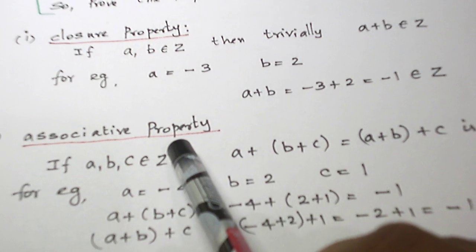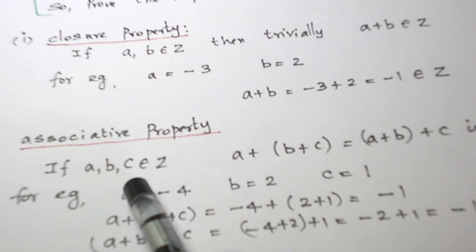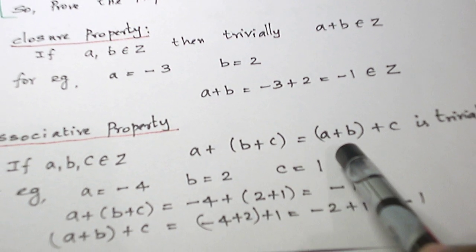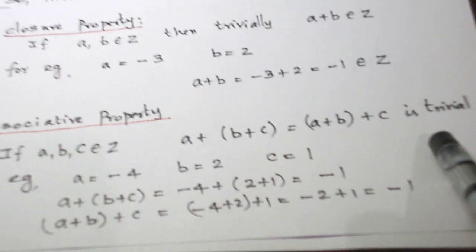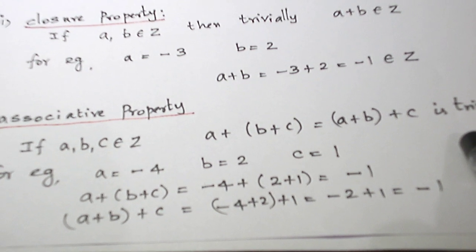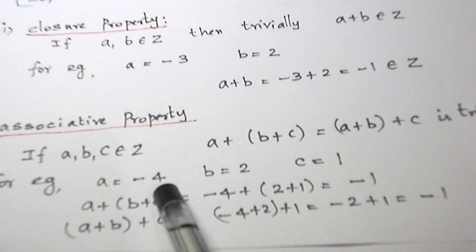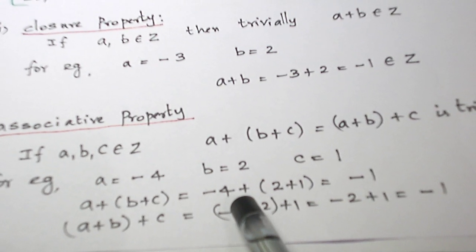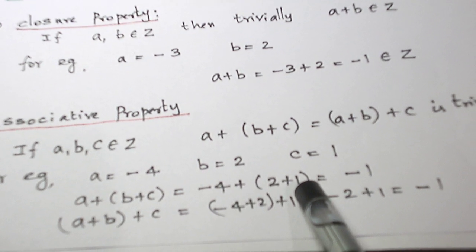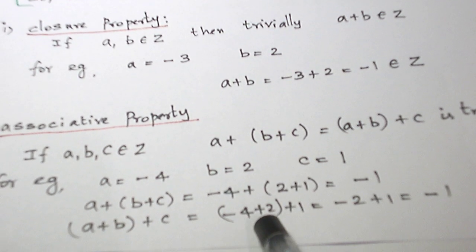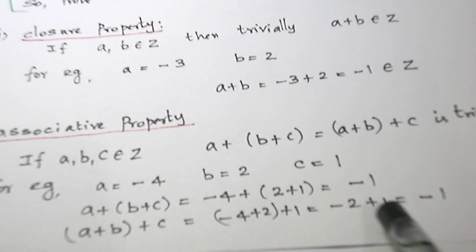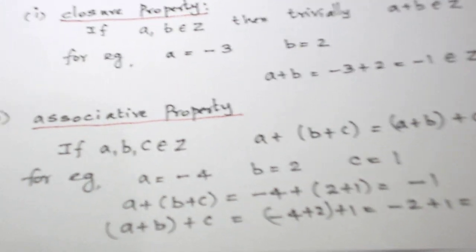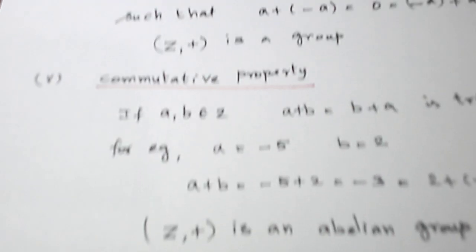Let us prove the associative property. Three integers A, B, C. We have to prove A plus (B plus C) equals (A plus B) plus C. This is also trivial under usual addition. Let us illustrate with an example. A equals minus 4, B equals 2, C equals 1. Minus 4 plus (2 plus 1) is minus 1, and (minus 4 plus 2) plus 1 is also minus 1. So these two are equal. Associative property is verified. We can only verify, not prove.